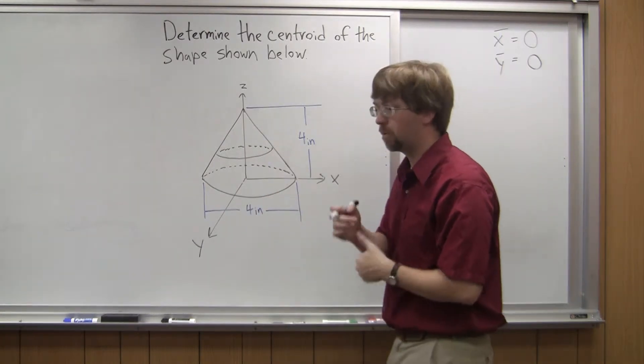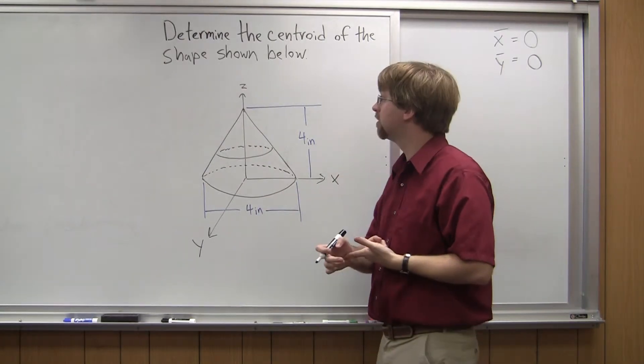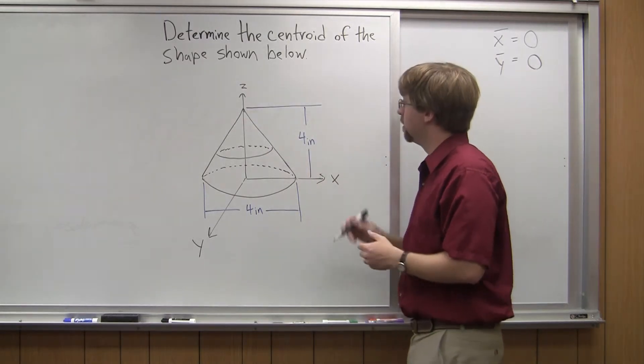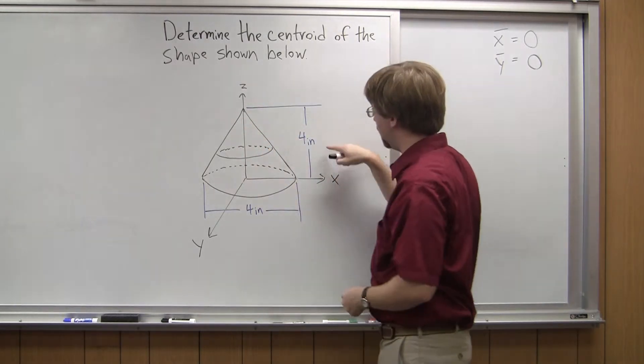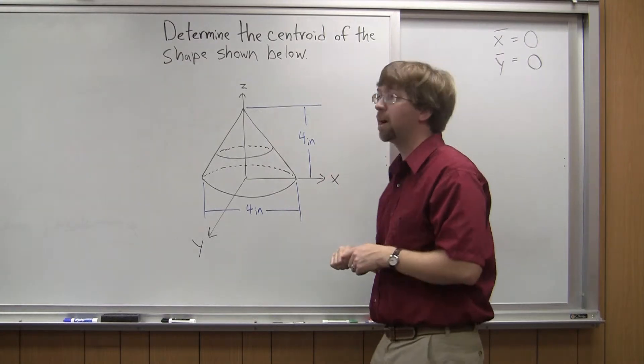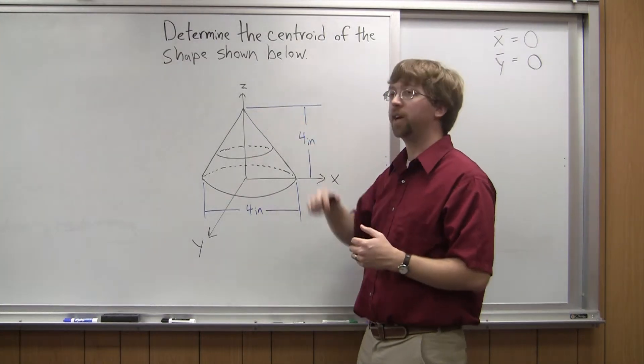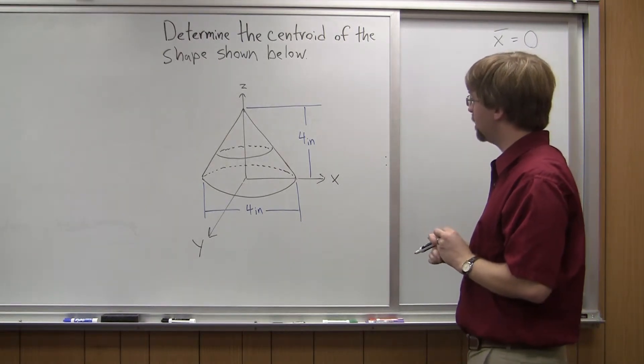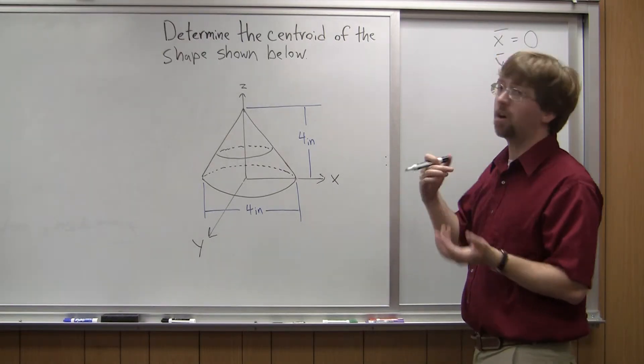So when z equals zero, my radius is two inches. The other thing I know, another point I can look at, is up here at the top. So by the time I get up to z equals four inches, my radius is zero. I've come to a point. So at that point, z equals four, r equals zero.